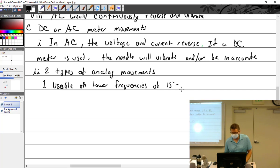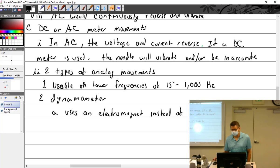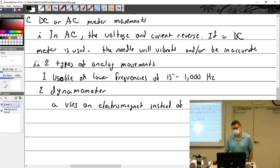Two types of analog movements usable on lower frequencies of 15 to 1,000 hertz. A hertz means cycles per second. So our house is at 60 cycles per second. And it is the dynamometer. And what does this one do? It uses an electromagnet instead of that permanent magnet.